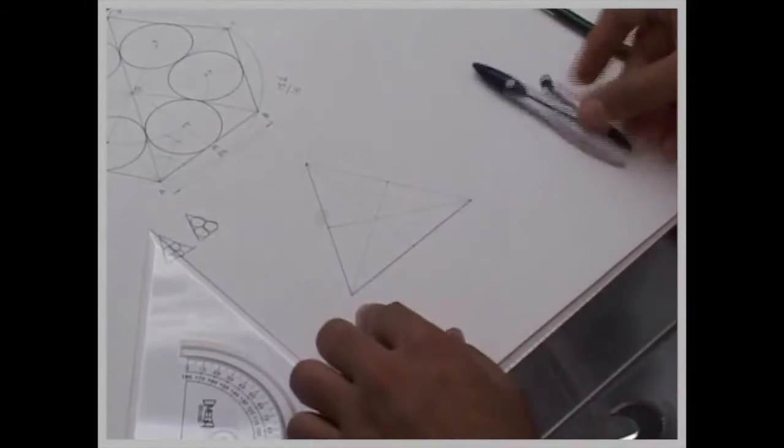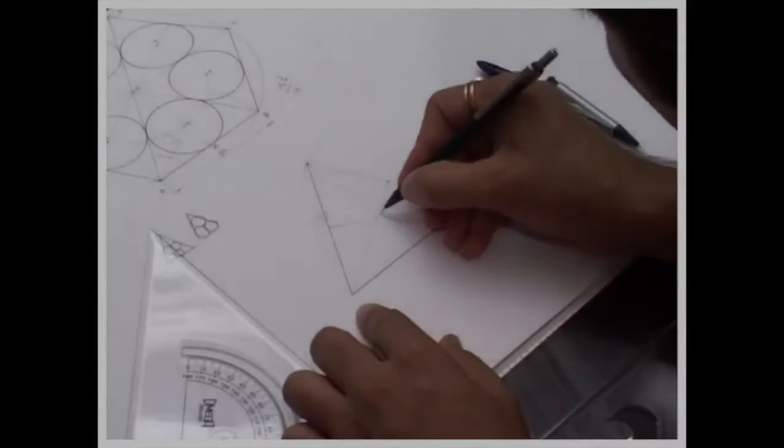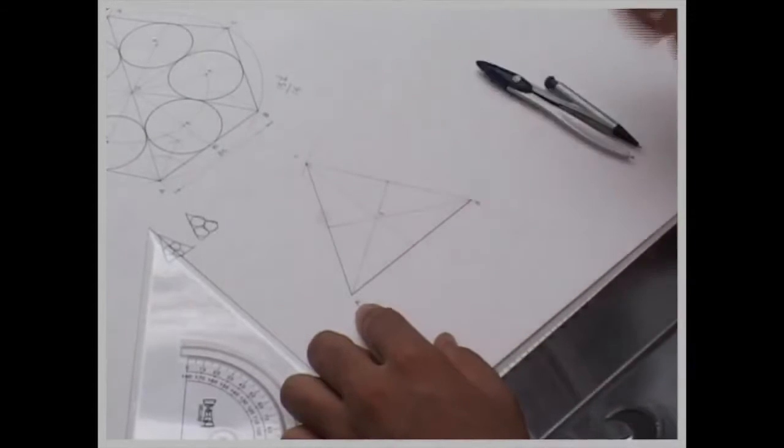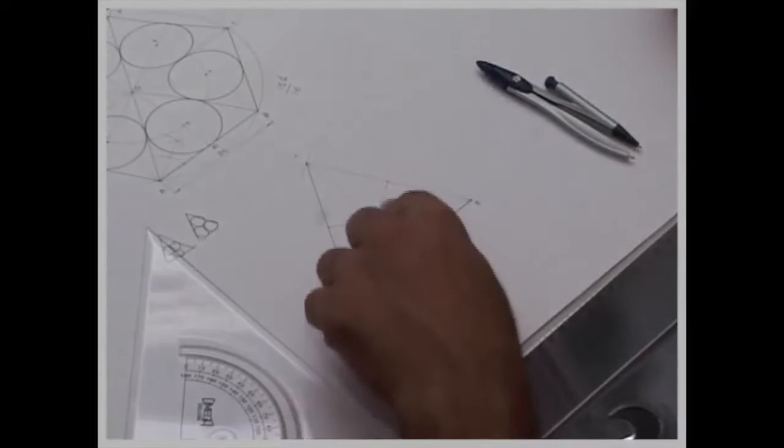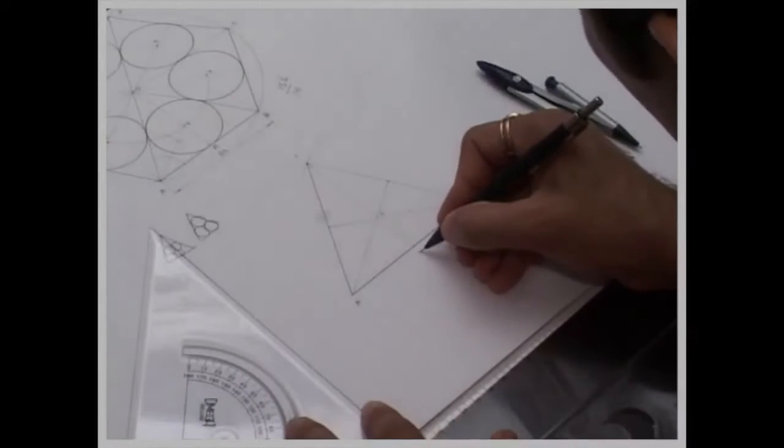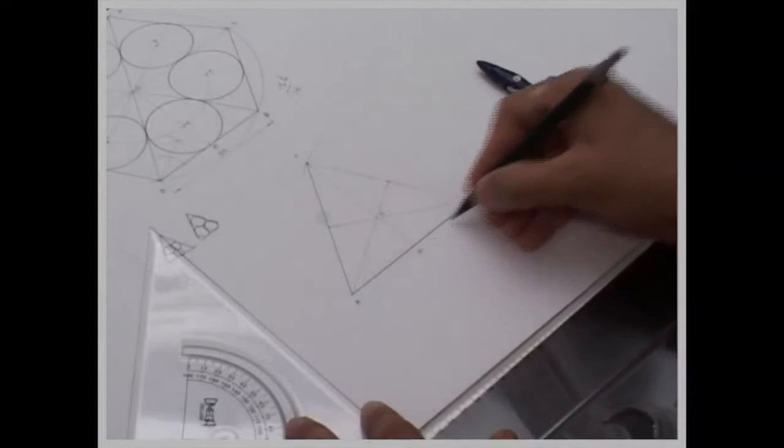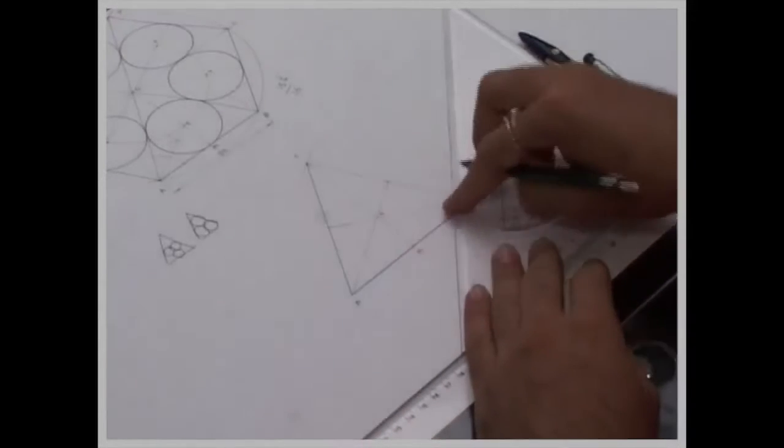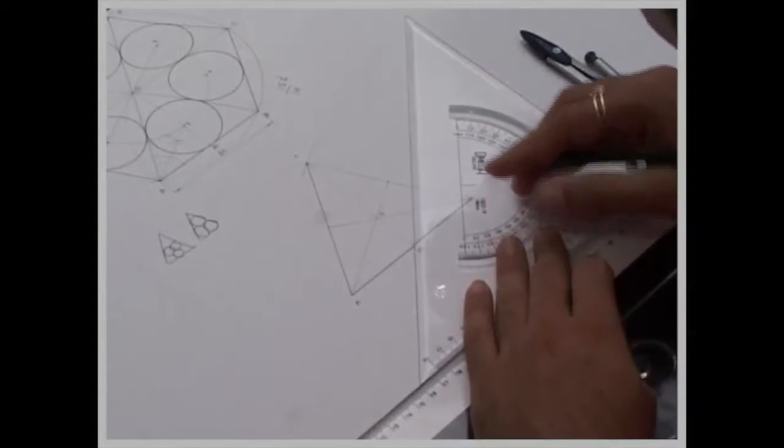Now in this case what we have done, we have divided triangles into three parts. Now we will bisect angle OMB, so instead of bisection we can take 45 degrees as well because it is a perpendicular thing. So what we will do,